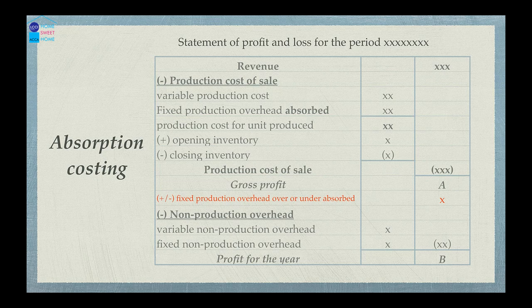If the overhead is under-absorbed, we adjust the production cost. To get from gross profit, we remove the effect when you are not able to store all properties of the products. After the gross profit comes the over-absorption and under-absorption adjustment. Then administrative overhead and distribution overhead — variable and fixed production overhead — are applied to arrive at the profit for the year.